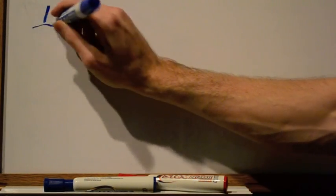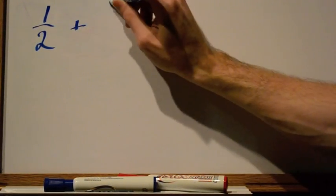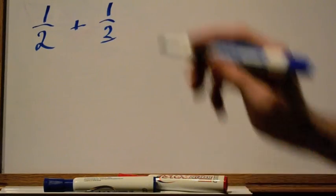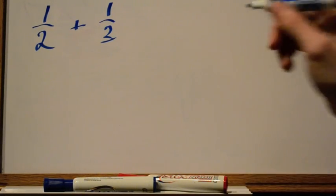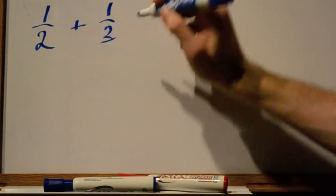Now we all know the common method. If we have 1/2 plus 1/3, we're going to find the lowest common denominator. And for this it's going to be 6.